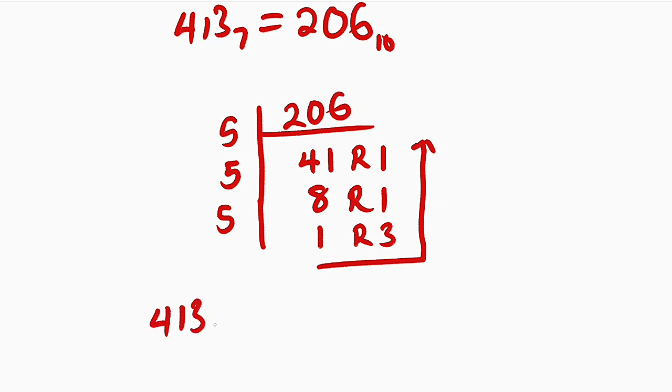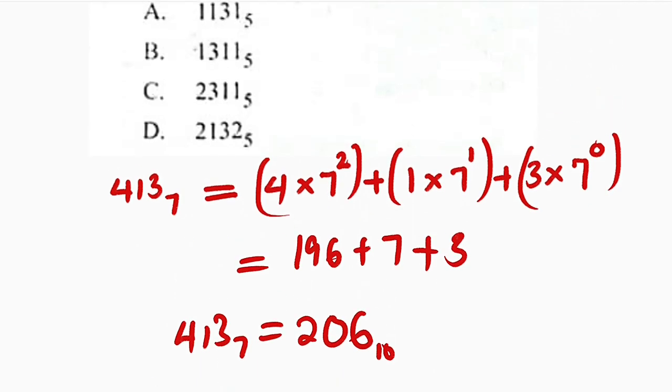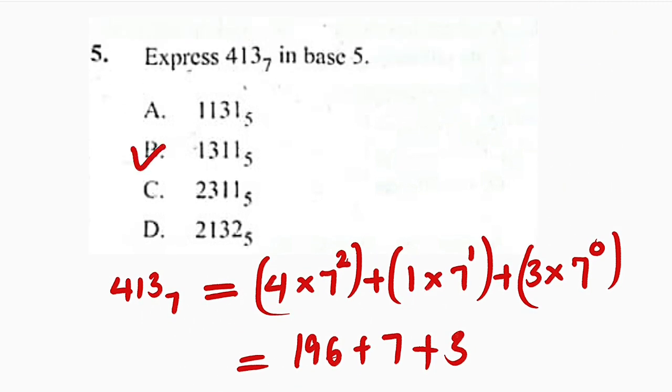Therefore, 413 in base 7 is equal to, you start with this number, which is 1, then 3, then 1, 1 in base 5. So we have 1311 in base 5. Let's check the option. You can see it is option B.